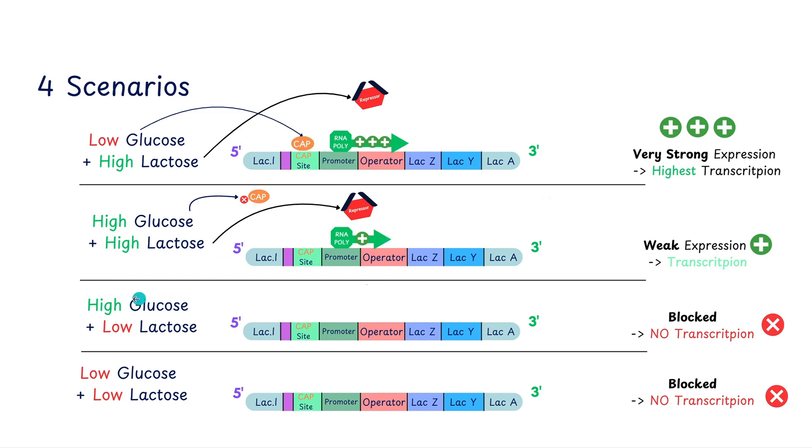The third case scenario is if we have high glucose and low lactose. This is the ideal scenario for the E. coli cell. It just wants to have glucose, and if lactose is present, we're able to do these up to scenarios. However, with high glucose, we don't need that CAP, and with low lactose, we don't have as much allolactose, so the repressor is still on the operator, and thus the RNA polymerase is blocked. The repressor acts as a roadblock, and the RNA polymerase is unable to transcribe the structural genes. Thus, we see here blocked and no transcription.